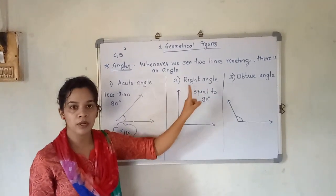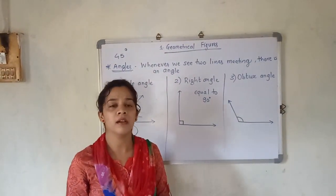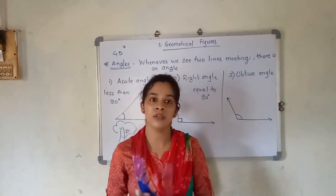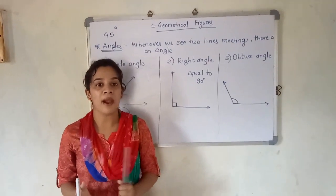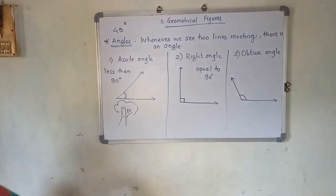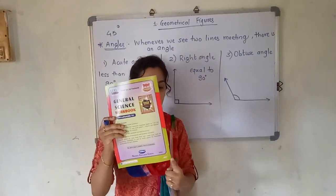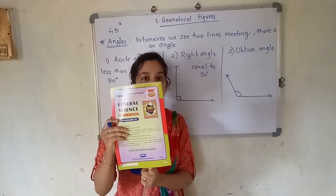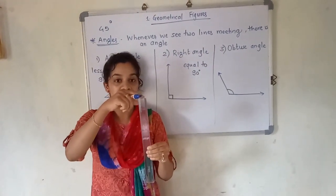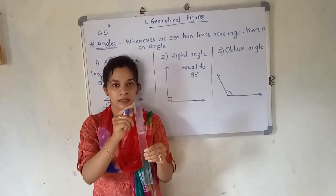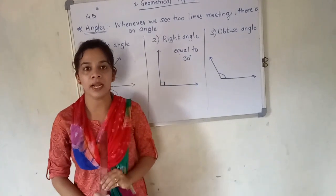Right angle means it is equal to 90 degrees. You may have seen right angles many times — for example, the two adjacent edges of your book. If you look at this edge and this edge of the book, you can see 90 degrees forming there. Similarly, you can see this edge and this edge of a scale — the angle formed there is called a right angle, which is equal to 90 degrees.